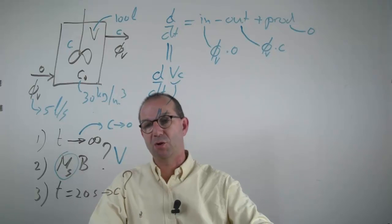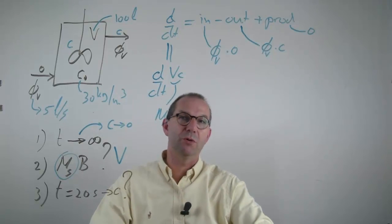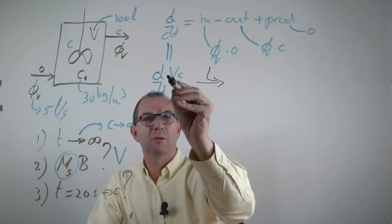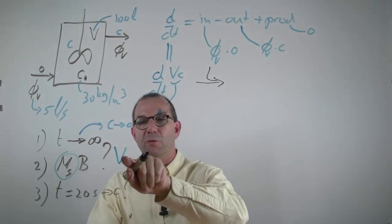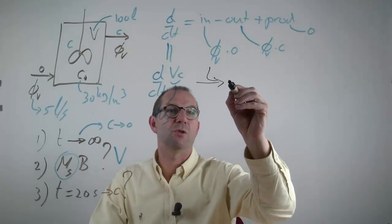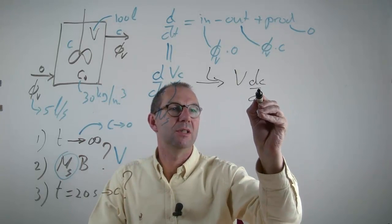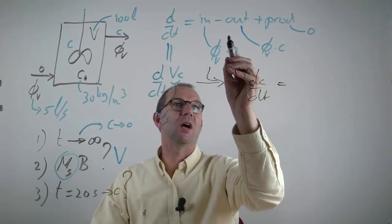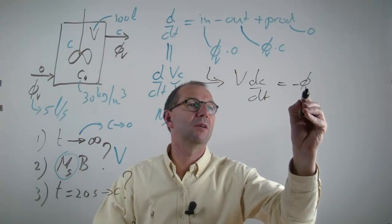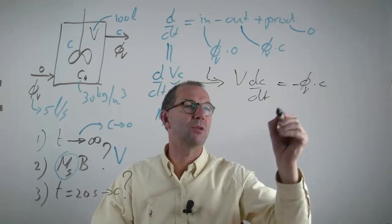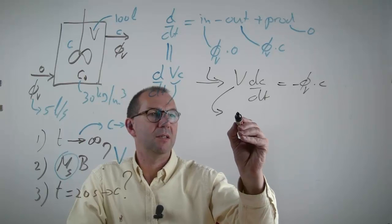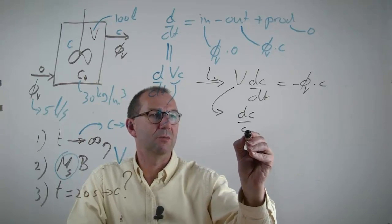Now I need to try and solve that and back out what happens over time. When I do that, let's go back to the black. The volume that I choose, the volume of the tank, is a constant, so that can be taken out. dC/dT is the left hand side. On the right hand side, all that is left is minus V times the concentration. This can be solved by separation of variables.